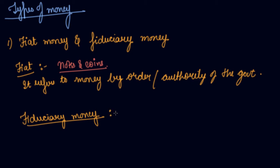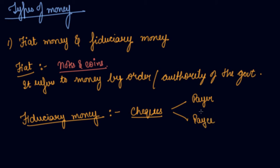Fiduciary money is money which is backed by the trust between the payer and the payee. Checks are a good example — there are two parties involved: the payer and the payee, and the middleman, that is your bank. It is not money authorised by the government, but it is the trust between the two parties — the payer and the payee. With checks, you get a medium of exchange and transfer your money from one person to the other. So this is your fiduciary money.